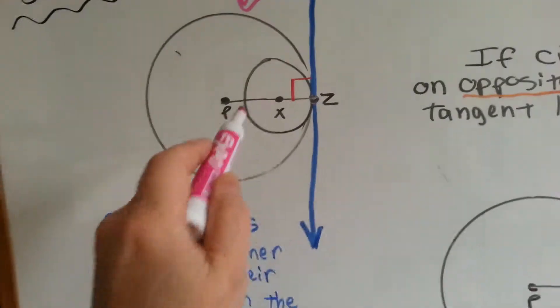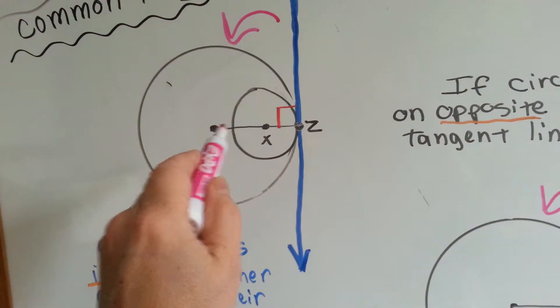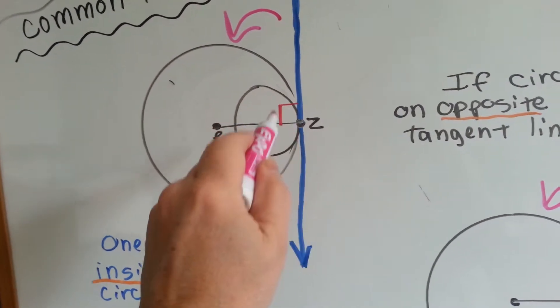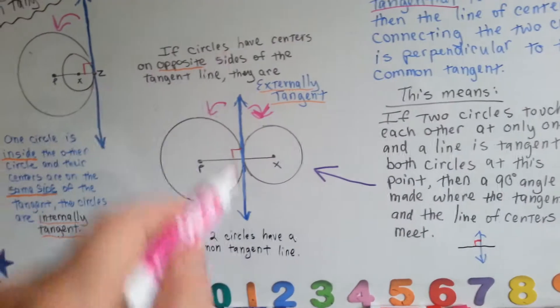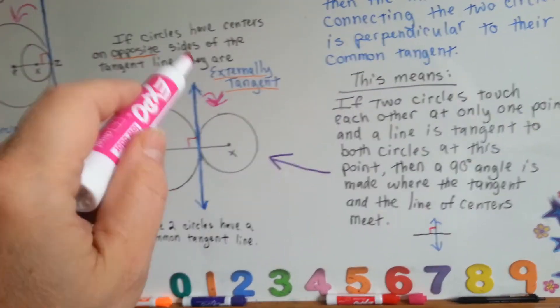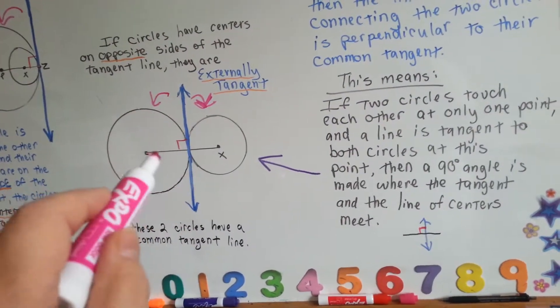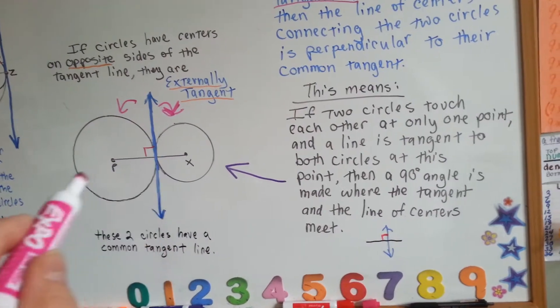Look at here. Here's the center point, and here's the center point, and here's the tangent line. It makes a 90 degree angle. So, whether it's internal or external, this tangent line makes a 90 degree angle with the center line.